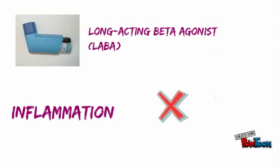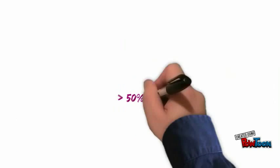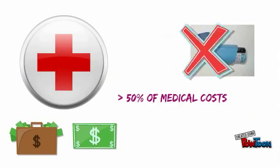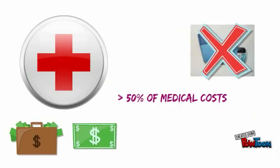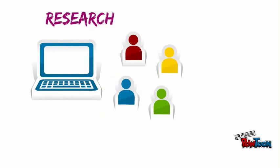Instead, LABA acts as a bronchodilator for those with narrow passages. However, 50 percent of medical costs related to asthma come from the five to eight percent of patients that cannot be treated with this gold standard treatment. This is where the bulk of the research lies when trying to treat these patients.